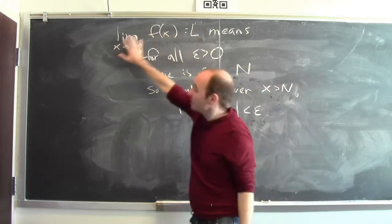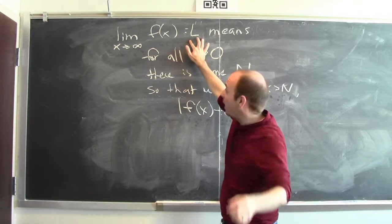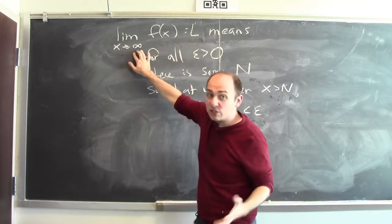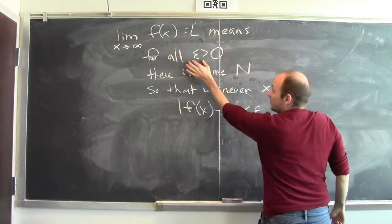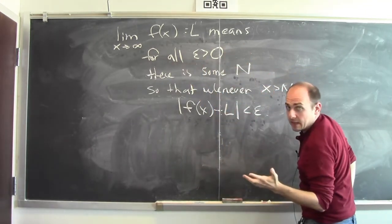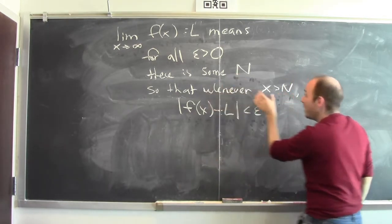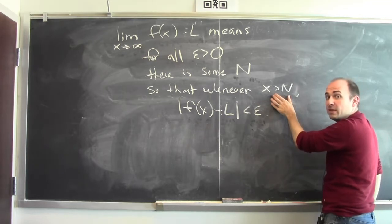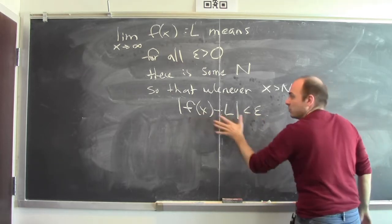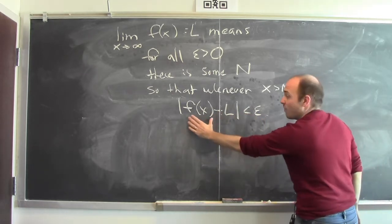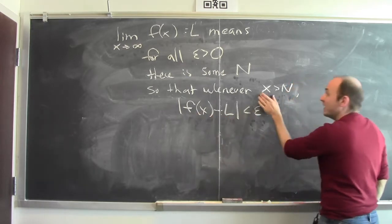What should something like this mean? This is saying that I can make f of x as close as you want to L by making x sufficiently large. And that's exactly what this is saying. For all epsilon greater than 0 — this is how close you want f of x to be to L — I get to respond by picking some big N so that whenever x is bigger than that big number N, then the distance between f of x and L is less than epsilon. The absolute value of this difference is measuring how far apart f of x and L are.